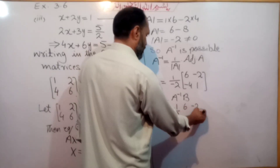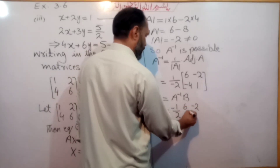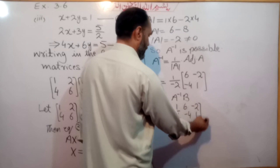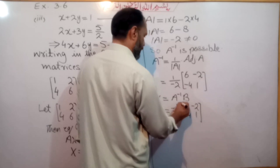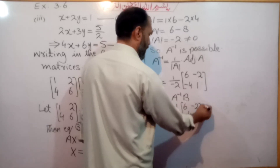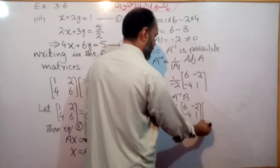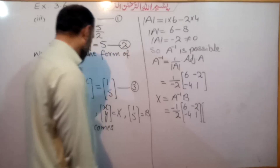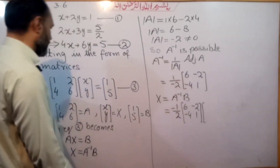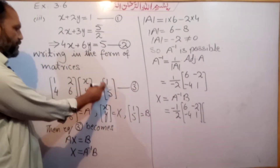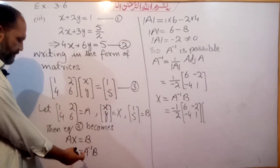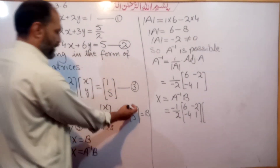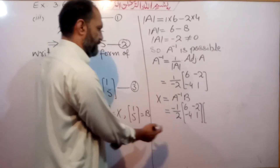So we have the matrix [[6, -2], [-4, 1]] multiplied by the B matrix [1, 5].